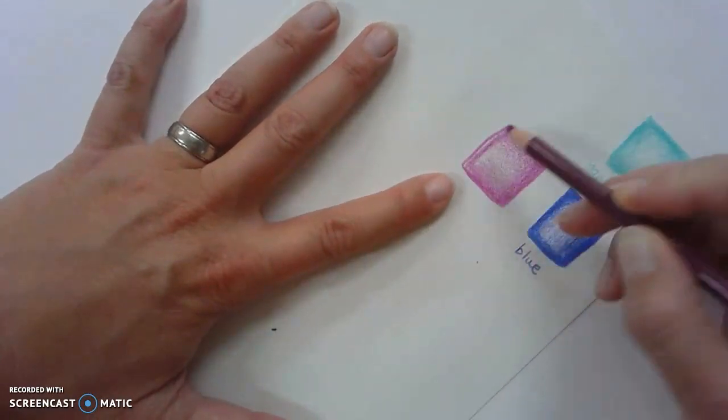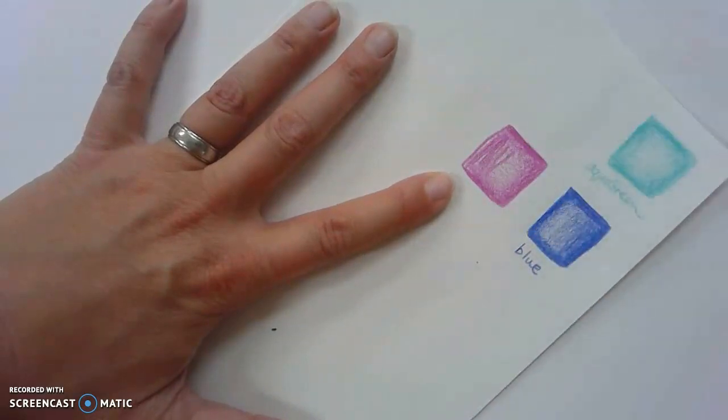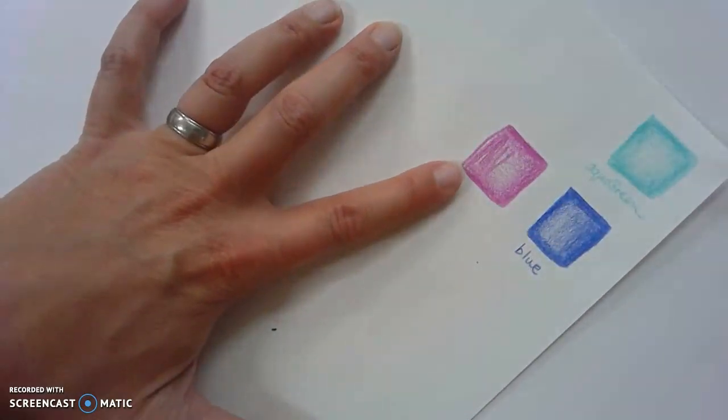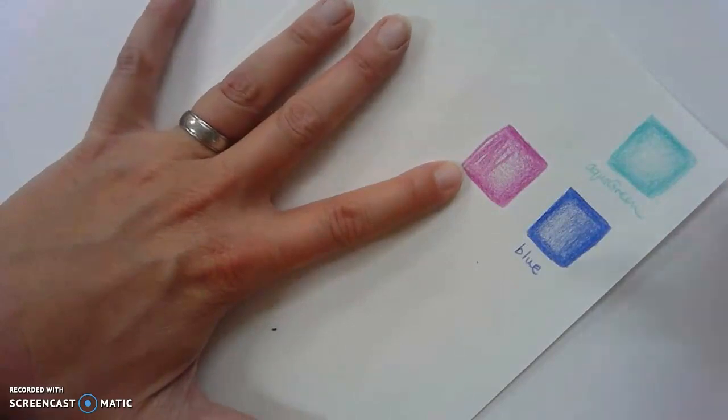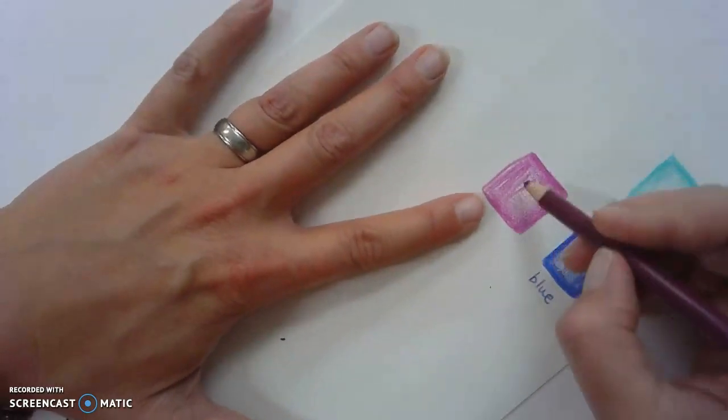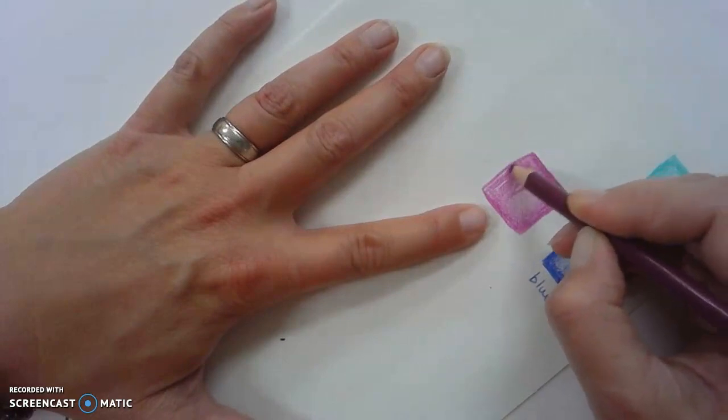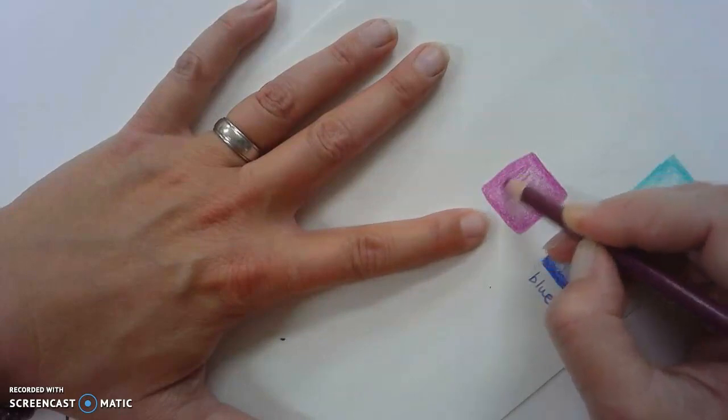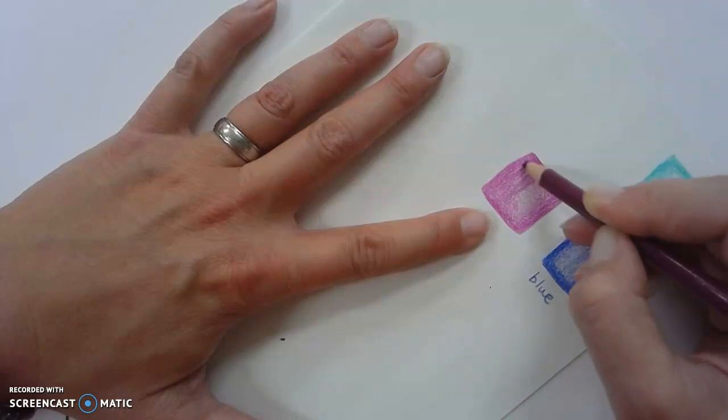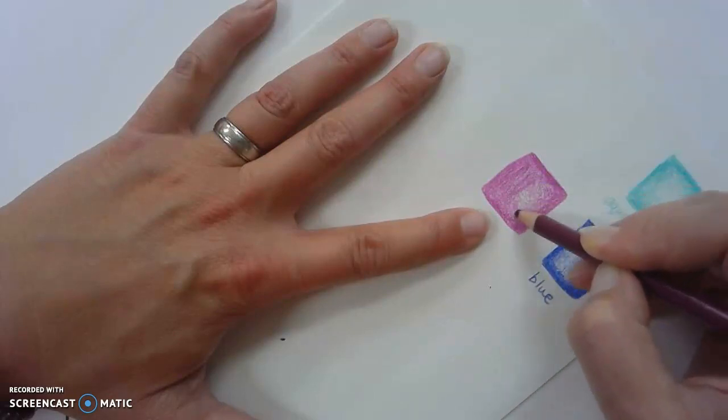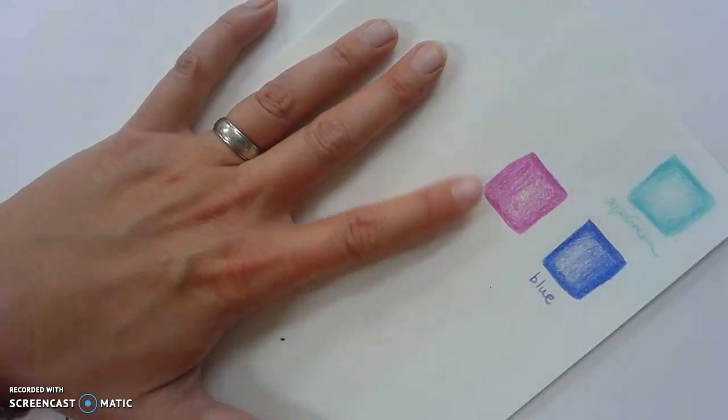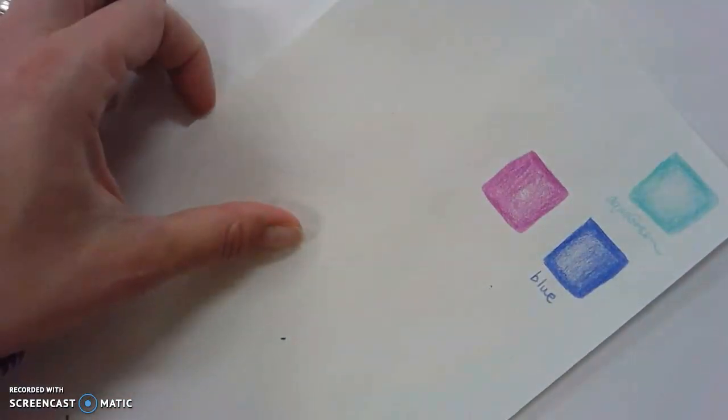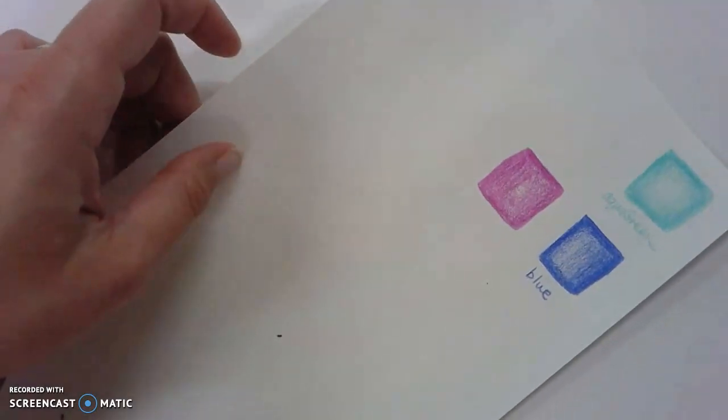As you're coloring, if you end up getting scribbled lines like that right there, we do not want scribbled lines. That is not good craftsmanship skill. You need to slow down. Come back in and fill in those white-gapped areas so we have a smoother transition in value. We don't want this to look scribbly. You need to make sure that you slow down.